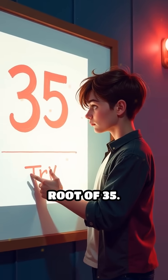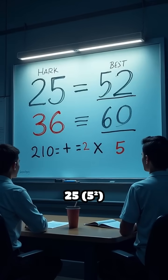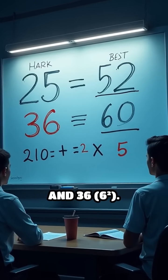You can use this for any number. Try the square root of 35. Nearest squares, 25, 5 squared, and 36, 6 squared.